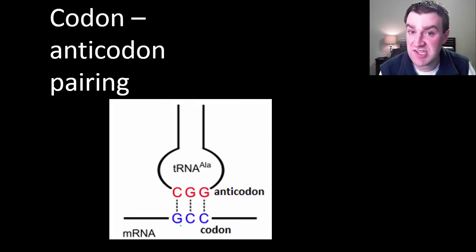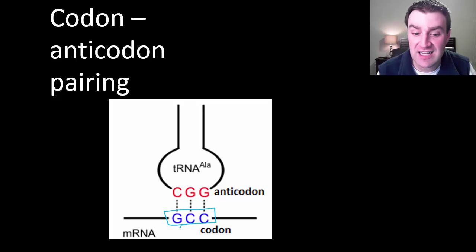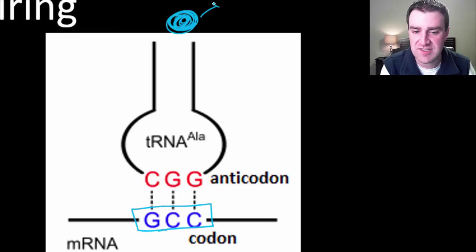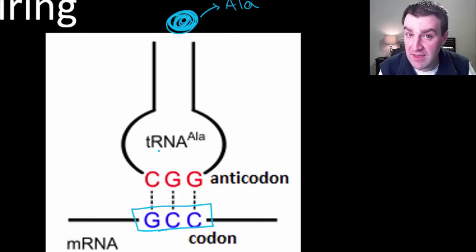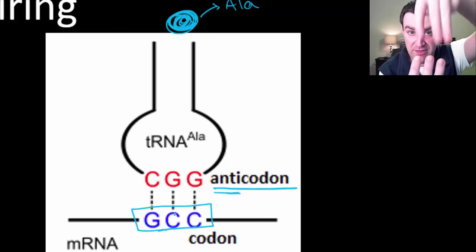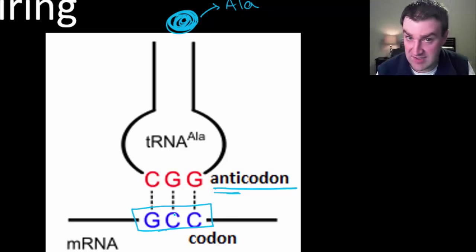You could pause the video and use your translation table to prove that GCC in mRNA code is asking for alanine (ALA). So there's a tRNA that specifically carries alanine — let's say this is the actual alanine amino acid. It brings that amino acid to the right place because its anti-codon CGG pairs up with GCC on the mRNA, so it lands right there and drops off alanine to the right place.